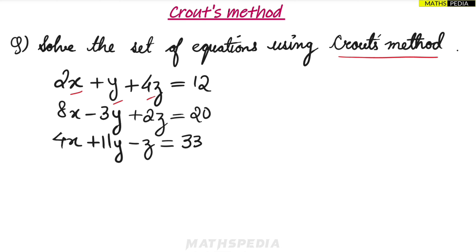The first step is to form the A matrix, X matrix, and B matrix. Before forming the matrix, remember that the variables should be in proper order — the first unknown is x, second y, and third z. All equations should have variables in the same order to avoid confusion when writing the matrix.